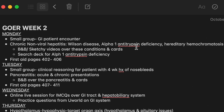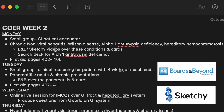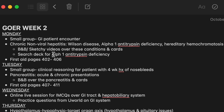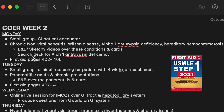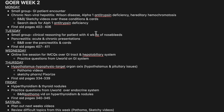I also put underneath that I've found videos for each of these conditions — Boards and Beyond videos and Sketchy videos. I also noted to search the deck for alpha-1 antitrypsin disease because I couldn't find a specific video for it. And I always have my First Aid pages listed so I can stay on top of the gastrointestinal material. I do this planning every Sunday so I know exactly what I'm going to do every single day, which saves me a ton of time and stress throughout the week.